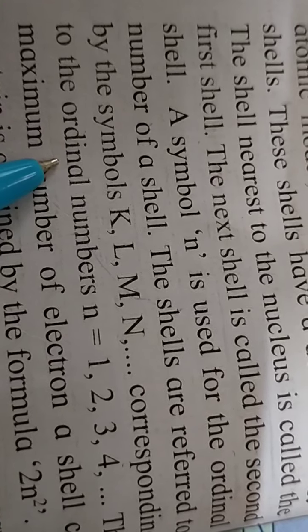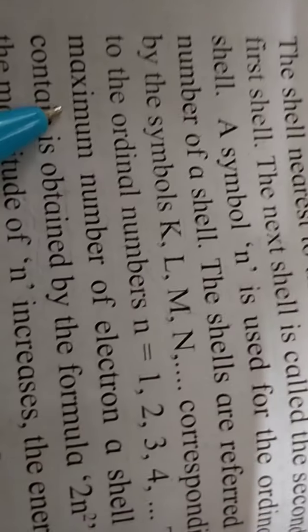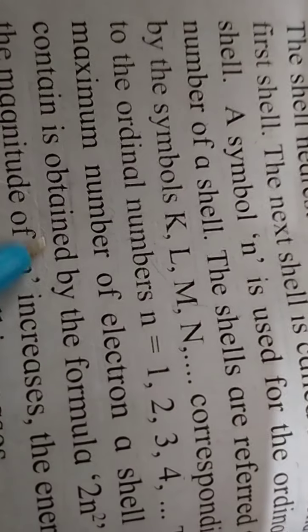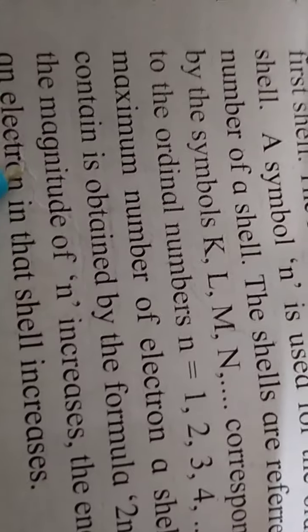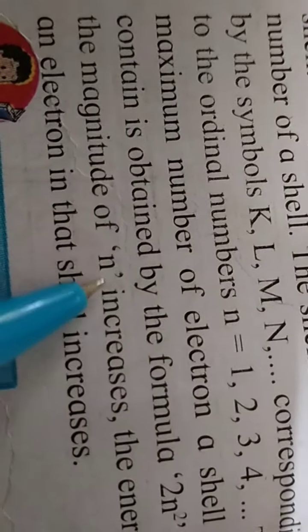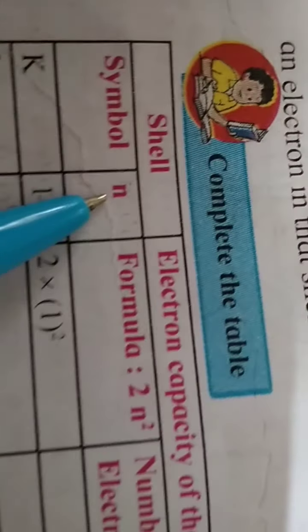Corresponding to the cardinal numbers, N equals 1, 2, 3, 4, and so on. The maximum number of electrons a shell can contain is obtained by the formula 2N². As the magnitude of N increases, the energy of the electron in that shell also increases. As N's magnitude increases, the energy in that shell also increases.